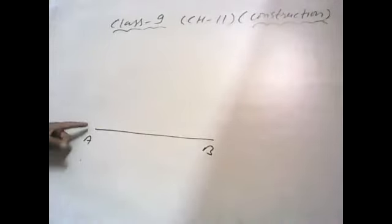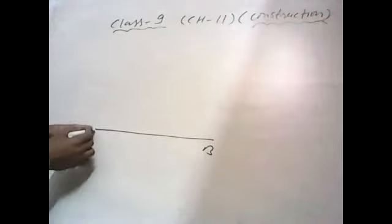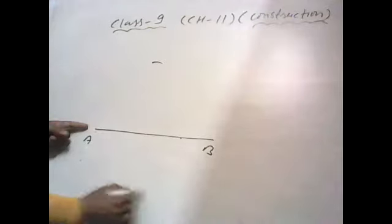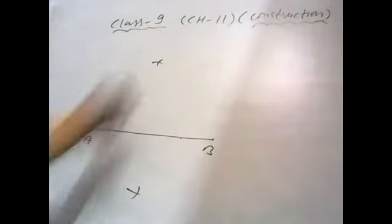First step, draw a line segment AB, then make more than half radius. Take more than half a radius and cut the arc both sides with both vertices without changing the radius and join this.